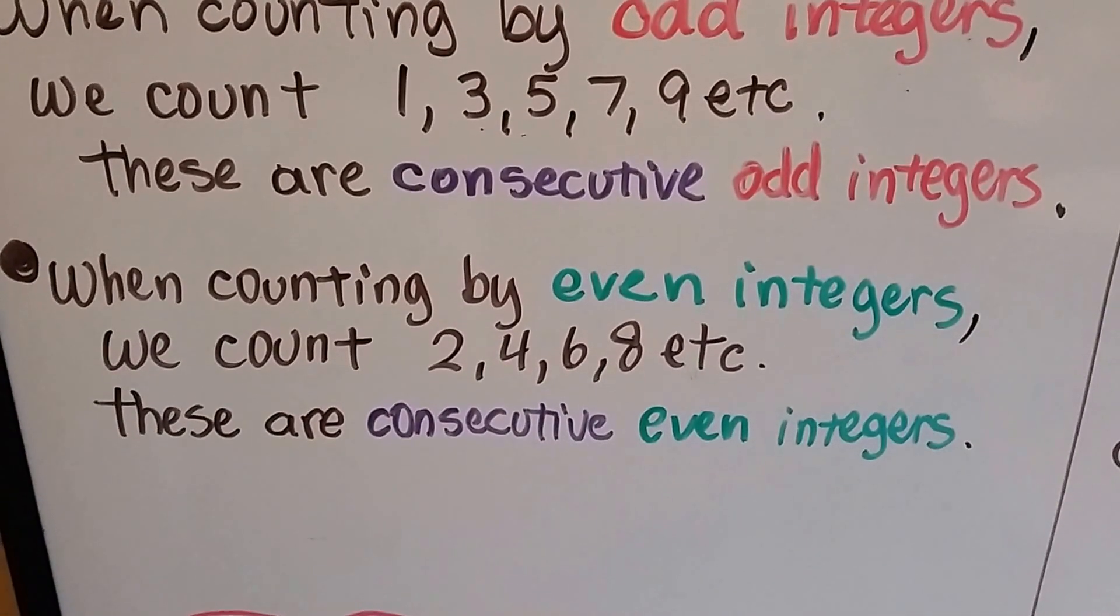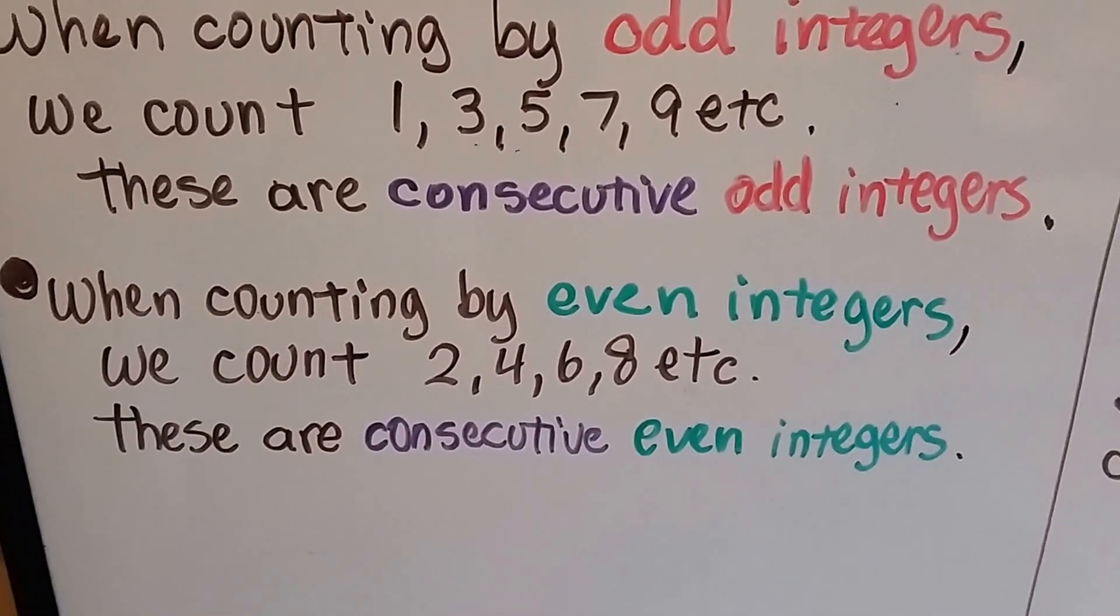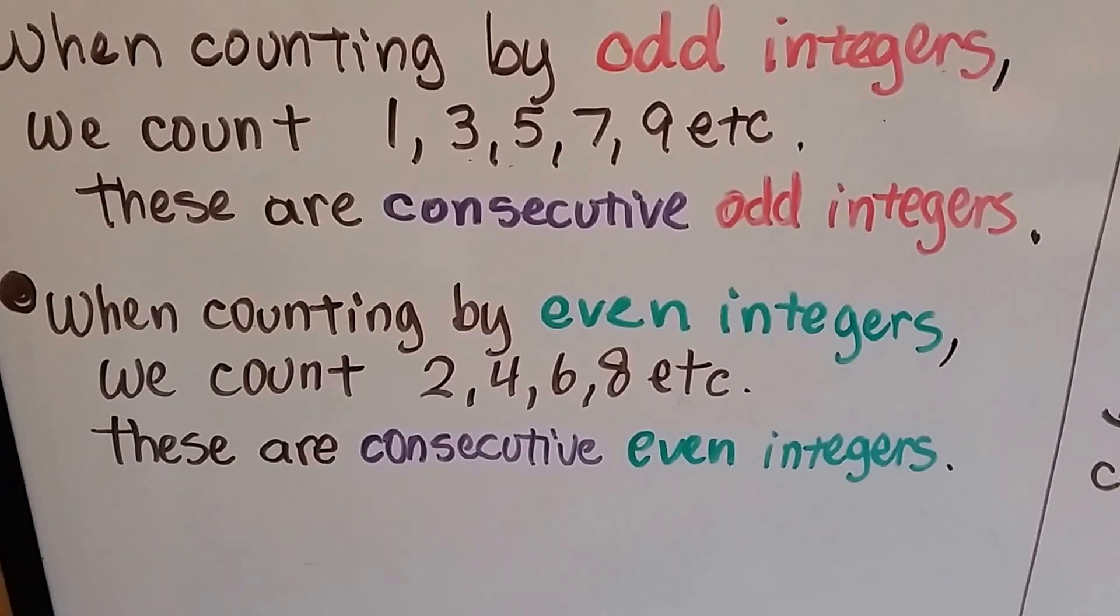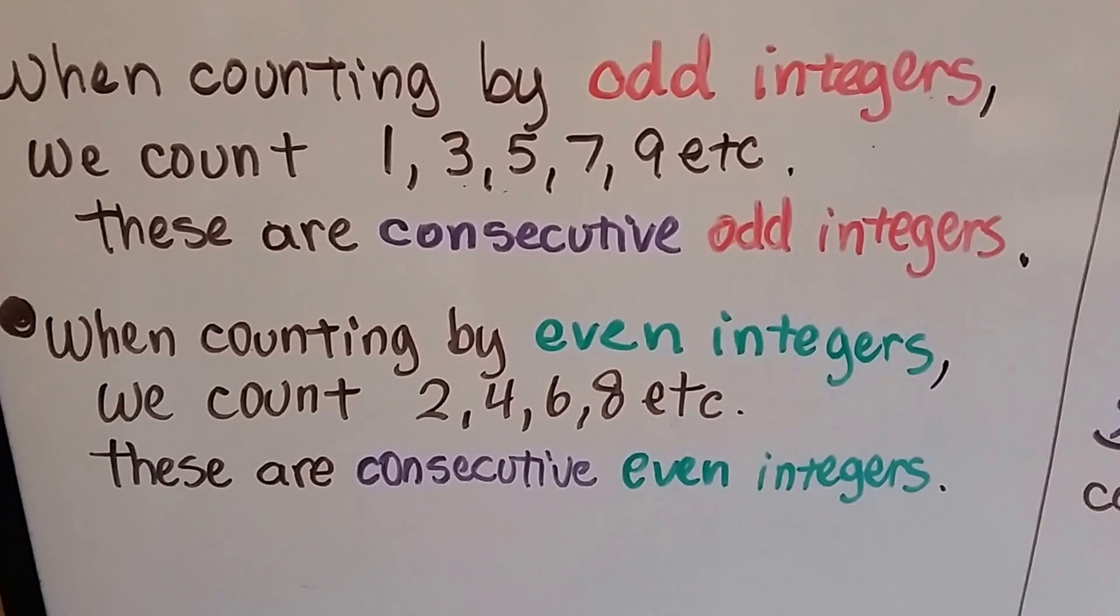When counting by even integers, we count 2, 4, 6, 8, and so on. Those are consecutive even integers. They skip count by 2, so do the odd ones.